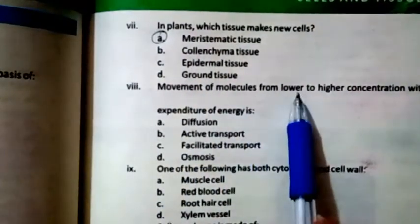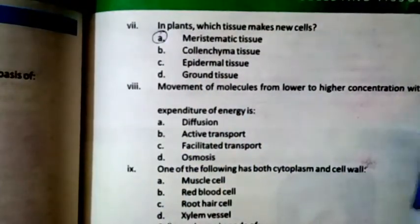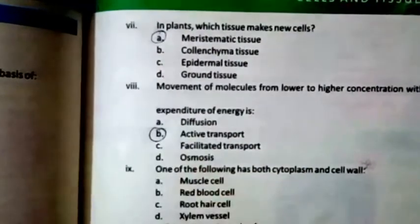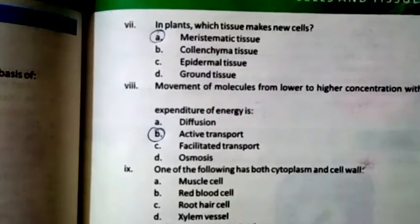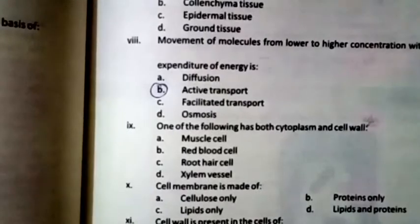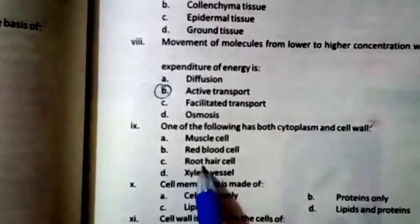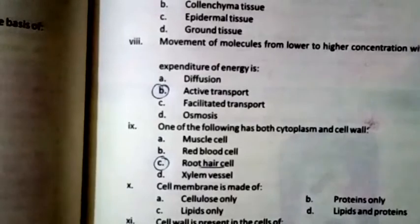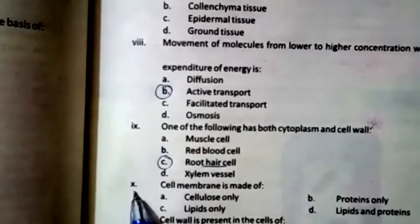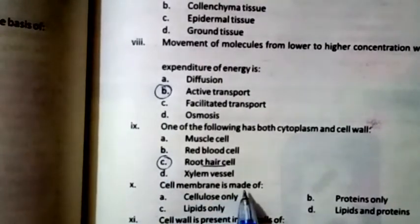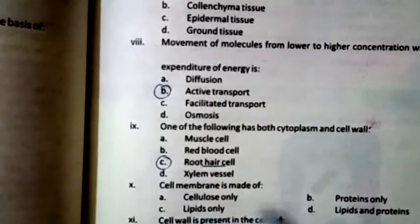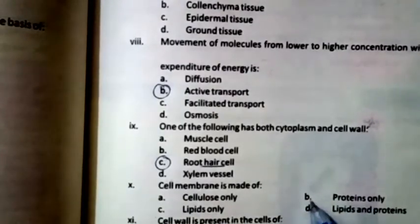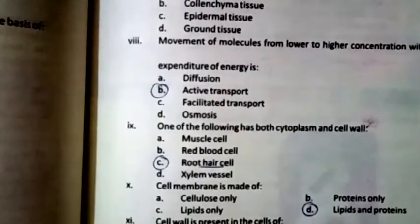Question seven: In plants, which tissue makes new cells? The right option is meristematic tissue. Movement of molecules from lower to higher concentration with expenditure of energy is active transport. One of the following has both cytoplasm and cell wall — the right option is root hair cell. Cell membrane is made up of lipid and protein.